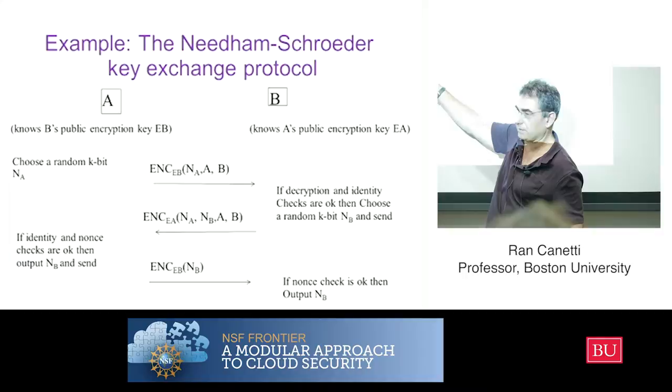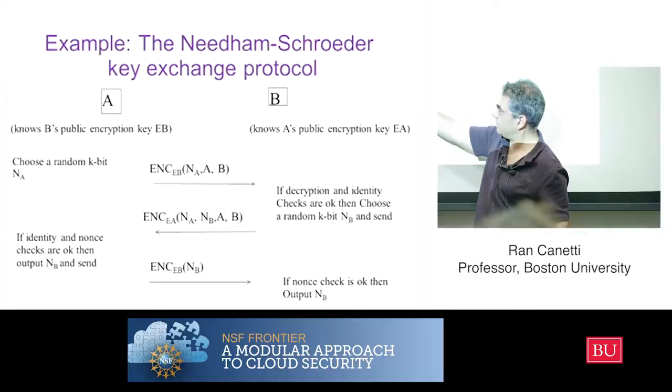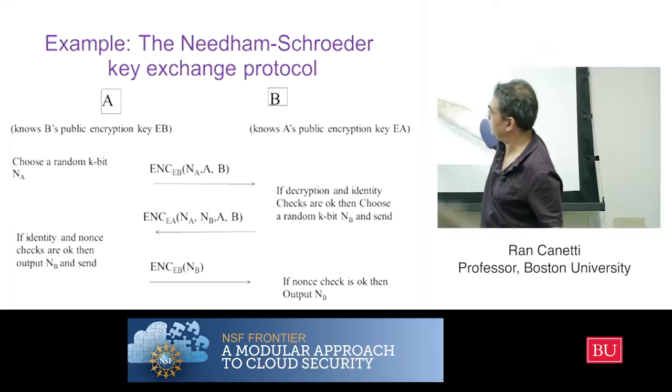Then A decrypts and sends back NB encrypted again, just to prove that A is actually A. Now both parties output NB as the shared key — this party outputs NB, and this party also outputs NB.